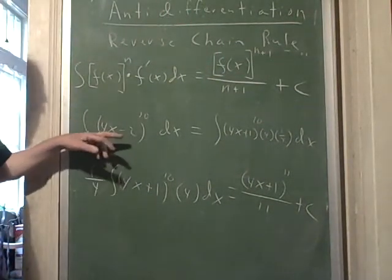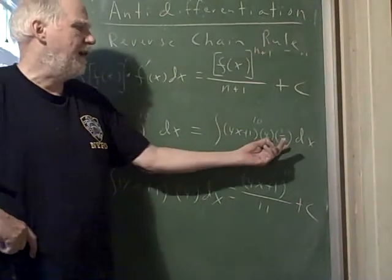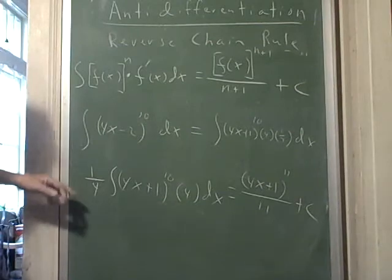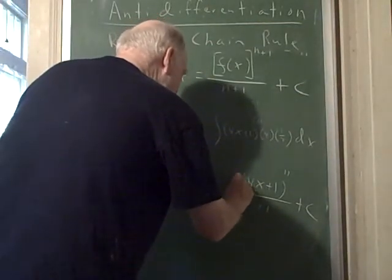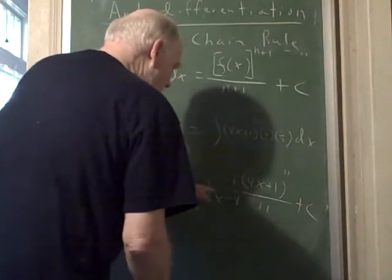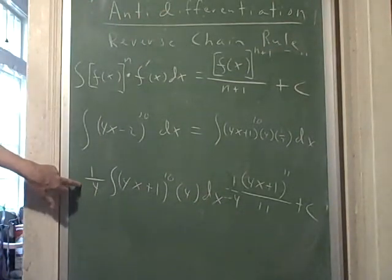So I kind of tricked the function, didn't I? I said, well, there's no 4 there, but I'm going to put a 4 in there times 1/4, and that's 1, and factor out the 1/4. And I just forgot my 1/4, didn't I? I have to have 1/4 here, and that would give me 44 on the bottom if I wanted to simplify.